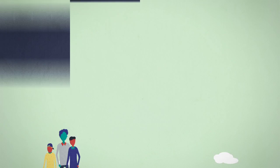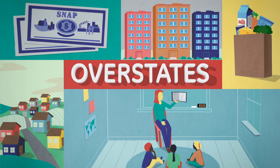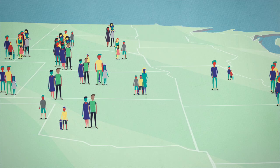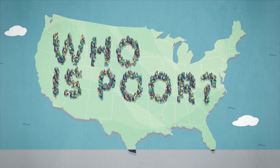It overstates poverty by not counting benefits like food stamps, subsidized housing, and childcare. It understates poverty by ignoring expenses like transportation, healthcare, and rent that take a huge bite out of a family's income. Without an accurate way to count people and families in need, we don't know who's poor in the United States. And this impacts policy, programs, and people.